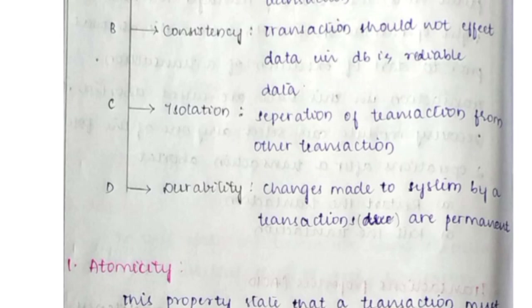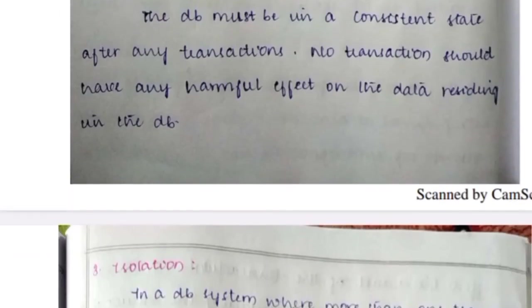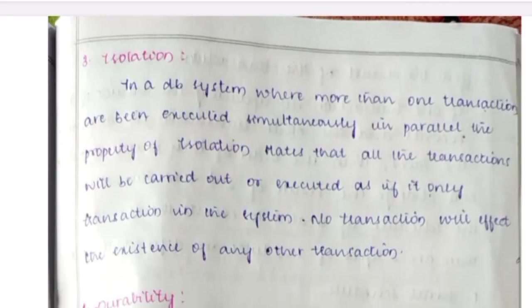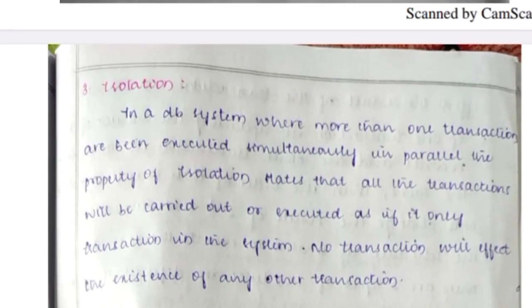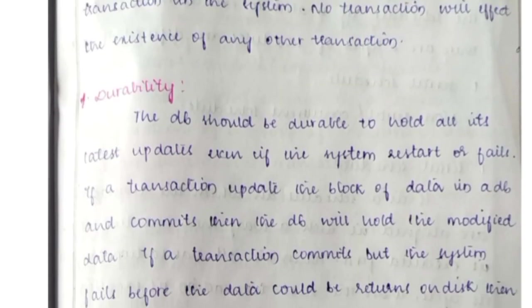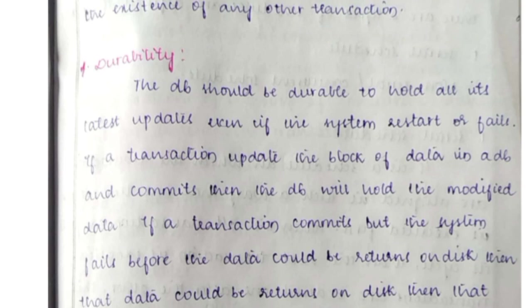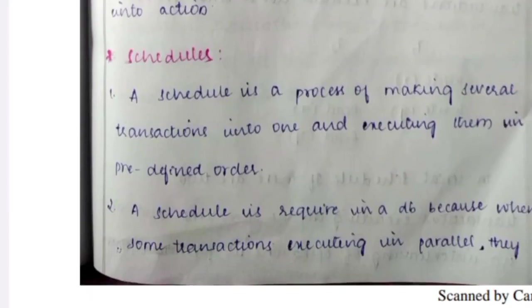Consistency means whatever data we require for the operation must be consistent — data consistency is very important. Isolation means that in a database system where more than one transaction is being executed simultaneously, isolation is applied to keep transactions separate. Durability means the system must be durable enough to hold all its latest updates.